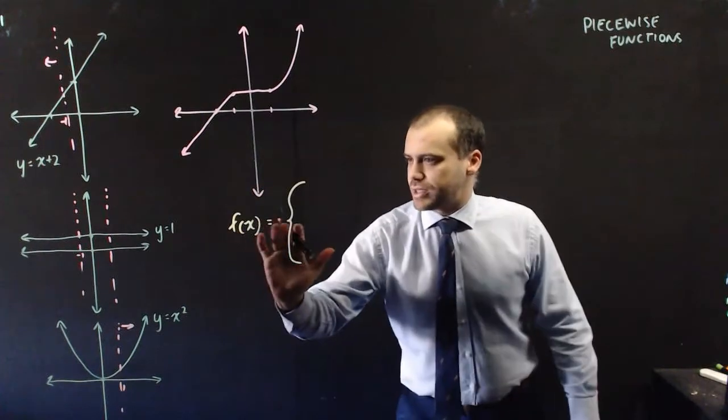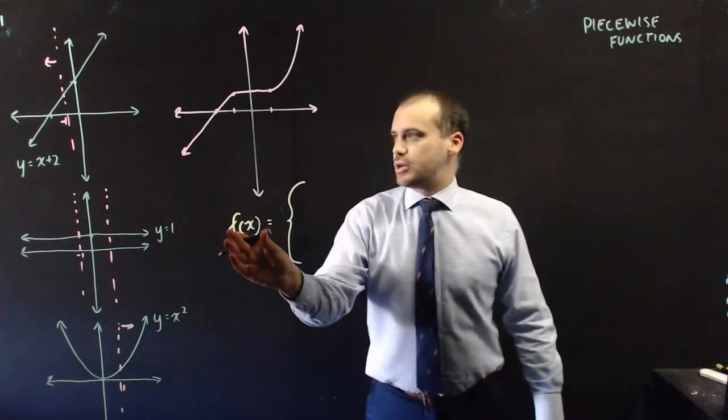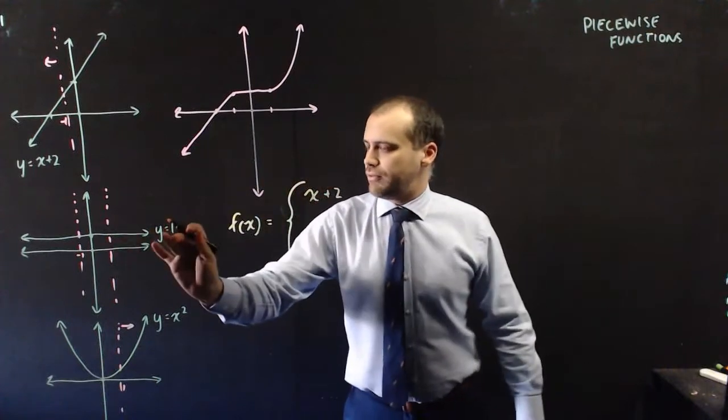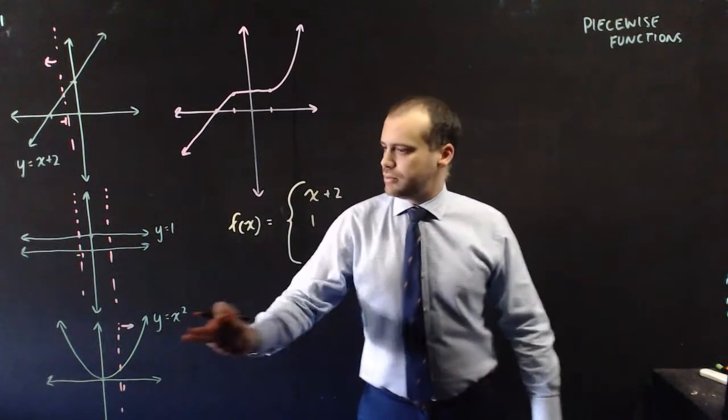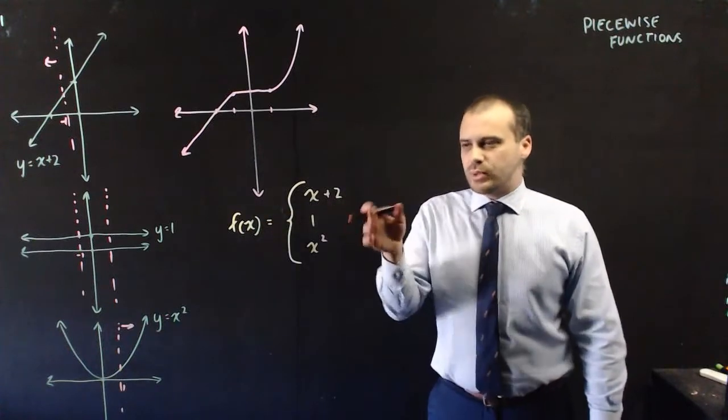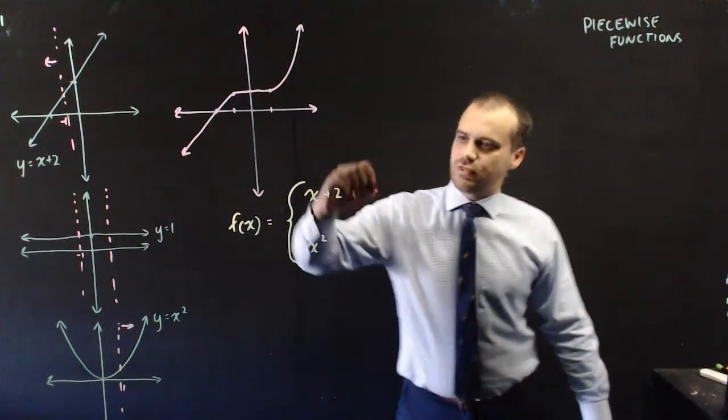Now how do we write this algebraically so we can communicate to someone that that's what we want? All right so f of x equals a big bracket because we're going to put three different functions here. So f of x equals x plus 2, f of x equals 1, and f of x equals x squared. But then we need to tell people when to use this function, when to use this function, and when to use this function.